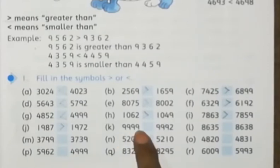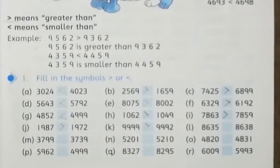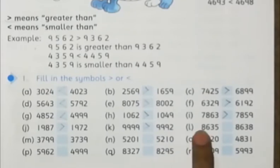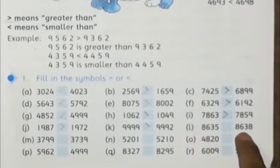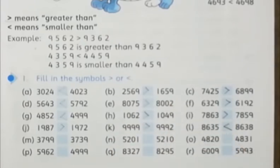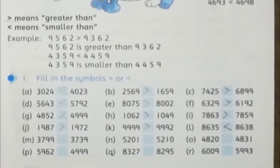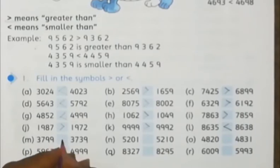9999 and 999 — so 9999 will be bigger. After that, 8635 and 8638 — 8638 will be bigger. So 8635 is smaller than 8638. In part M we have 3799 and 3739 — obviously 3799 is bigger than 3739.